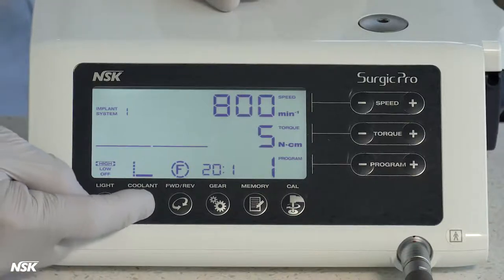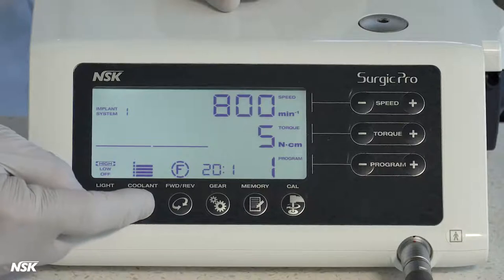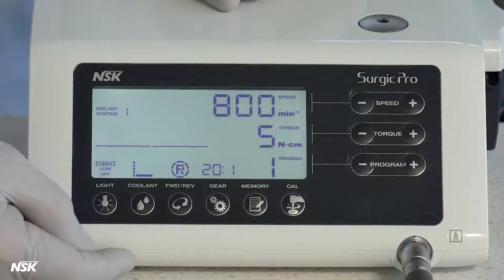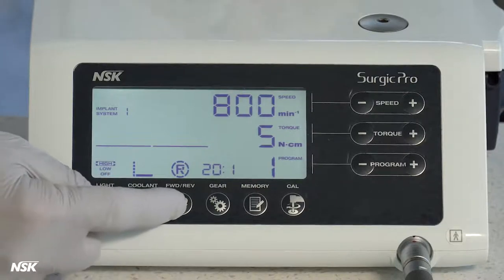Coolant flow button adjusts the level of coolant and can be set up to six different levels, which includes no water flow at all. Forward reverse button changes the rotational direction of the micromotor.